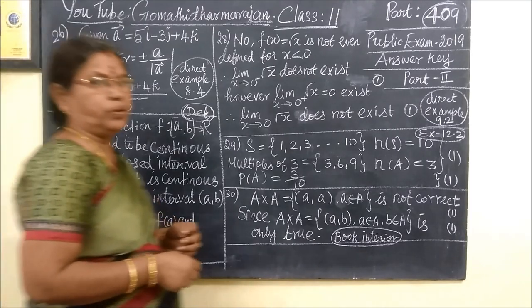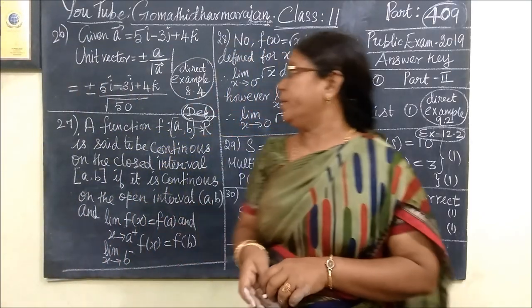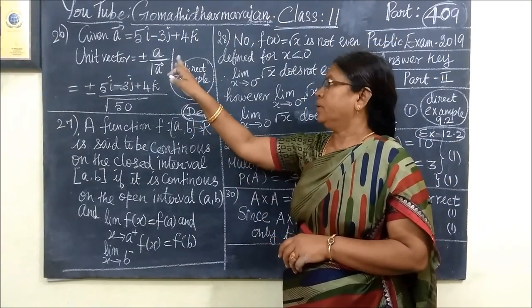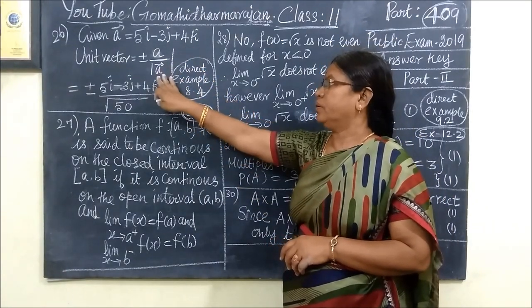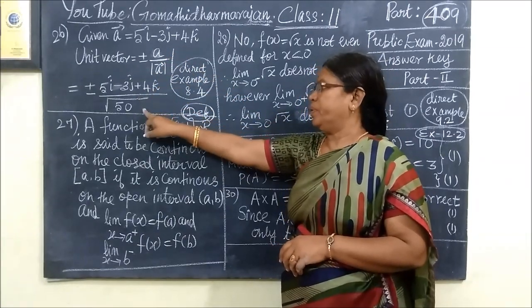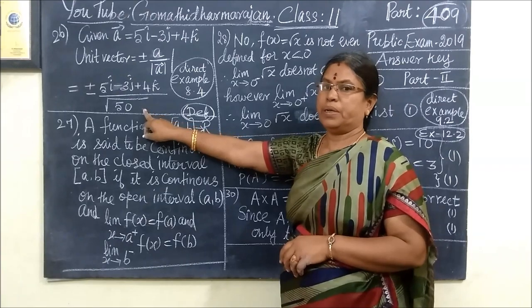This is question number 26, a direct question. Example 8.4: Given a unit vector, we know the formula is divided by the root of a squared plus b squared plus c squared.